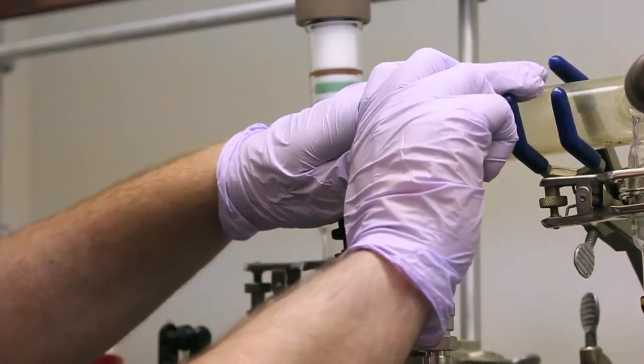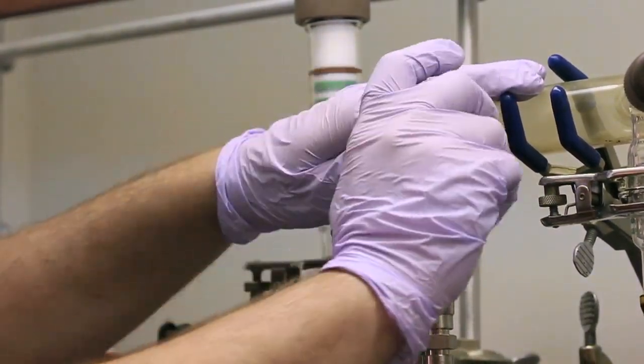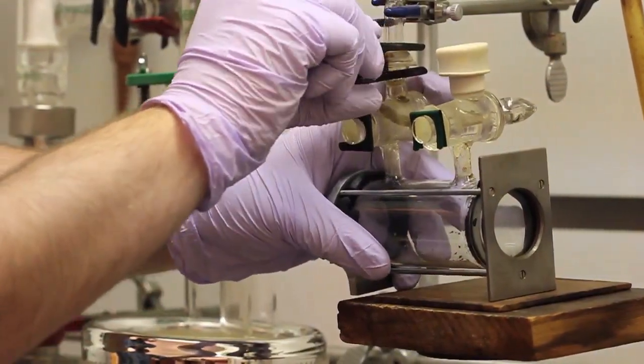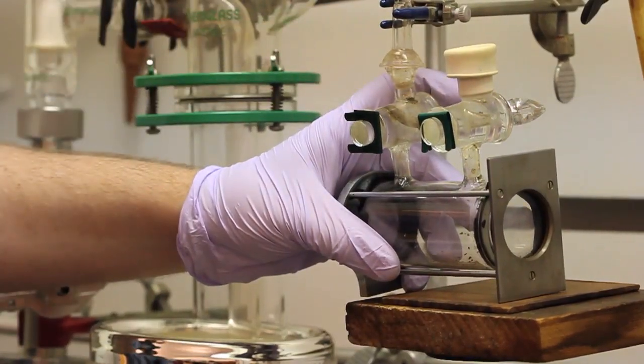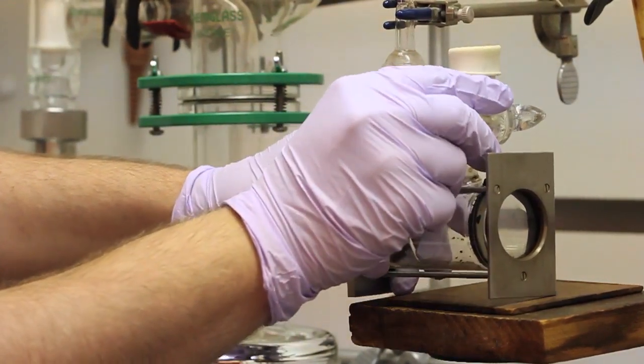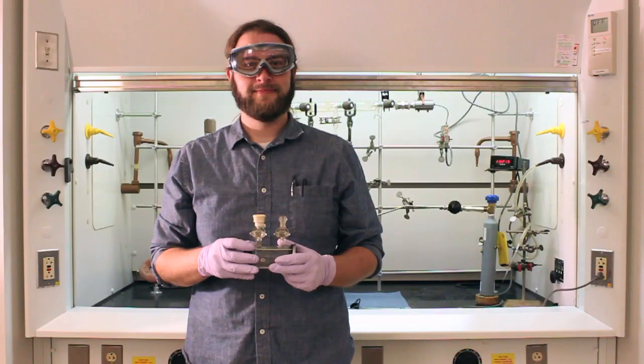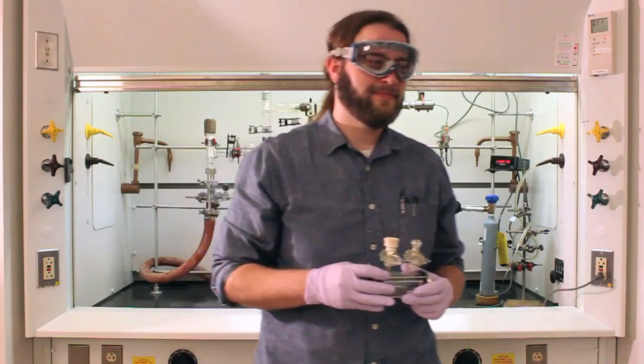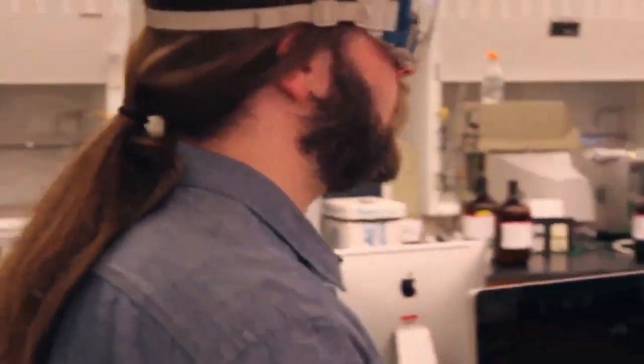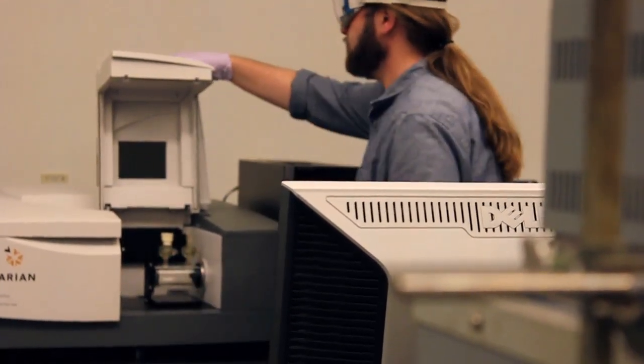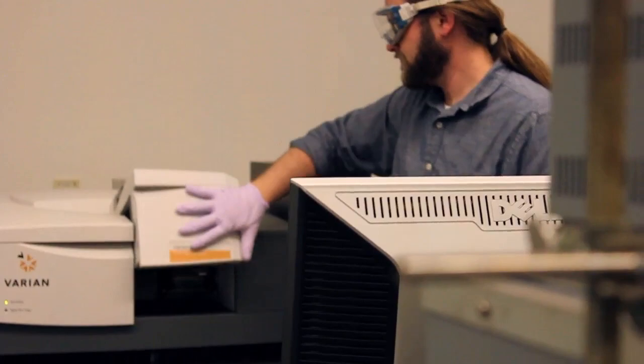Next, close the sample manifold valve in order to disconnect the sample cell. Then, gently rock the sample cell toward you to break the seal and remove the sample cell from the manifold. You are now ready to acquire a sample FTIR spectrum. Follow the handout for details on setting up your acquisition. After completing your acquisition, see your instructor for details on how to empty the sample.